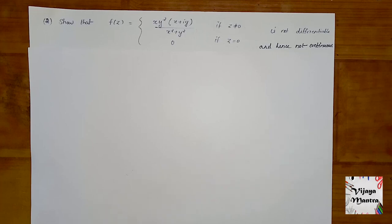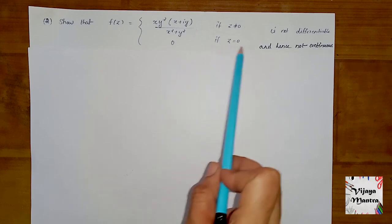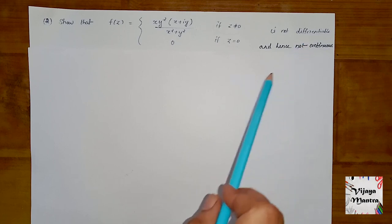Namaste. Now we'll look at problems on differentiability and continuity. The question is: Show that f(z) = xy²(x + iy) / (x² + y²) if z ≠ 0, and f(z) = 0 if z = 0, is not differentiable and hence not continuous.